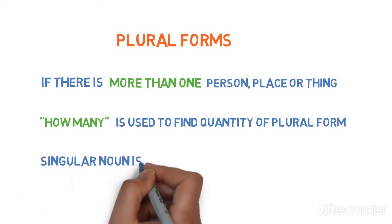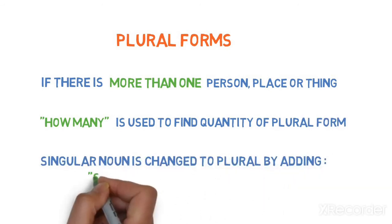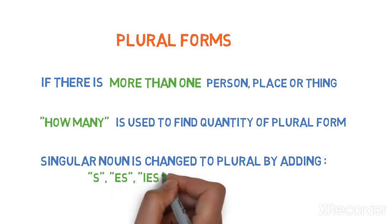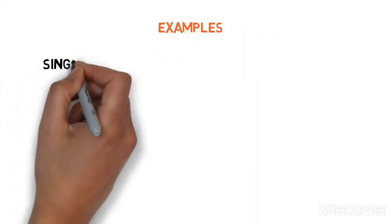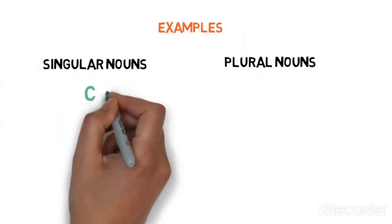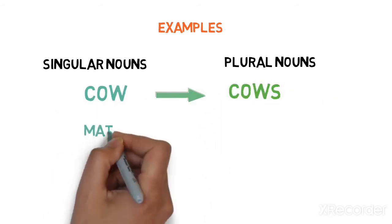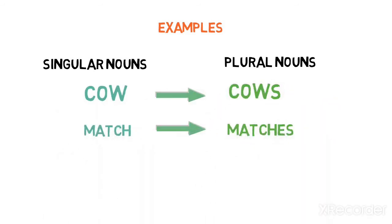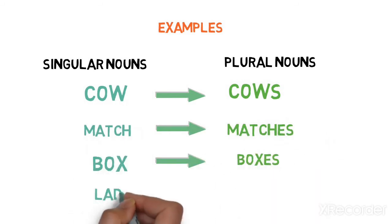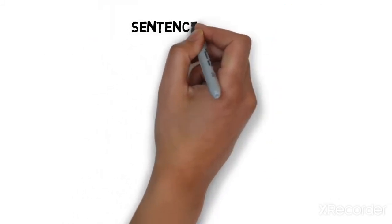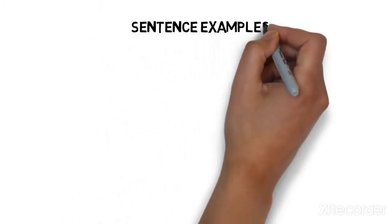Singular noun is changed to plural noun by adding s, es, and ies at the end. Let's see examples of singular nouns and their plural forms. Cow, its plural form is cows. Match has matches. Box has boxes. And lady has ladies. See the word at the end of plural forms s, es, and ies in the examples.